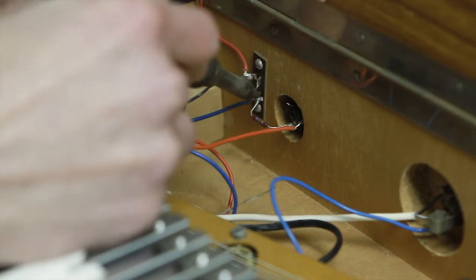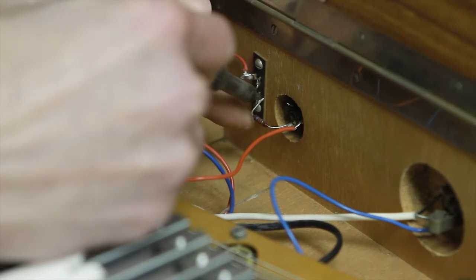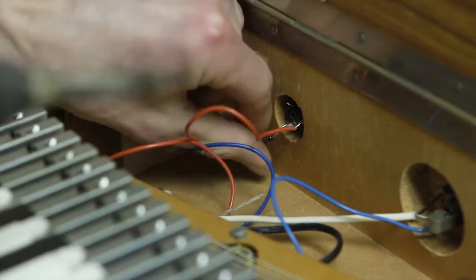Next, desolder the blue ground wire going from the tag board to the pre-amplifier. Lastly, desolder the resistor from the jack.